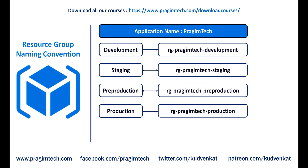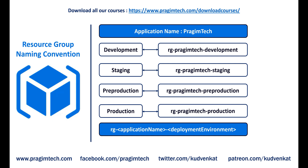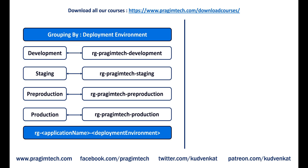If you notice the names of these resource groups, there is a naming pattern. The prefix 'rg' stands for resource group, then a dash, then the deployment environment name — development, staging, pre-production, or production. In this example, we are grouping the resources by deployment environment, and that is just one way of grouping. You can group resources any way you want.